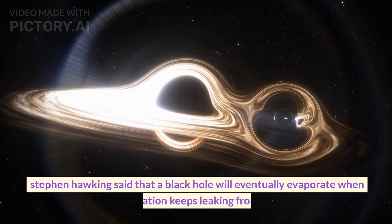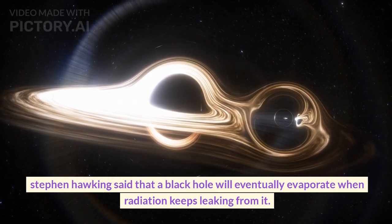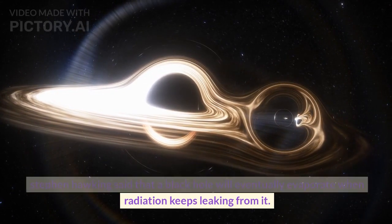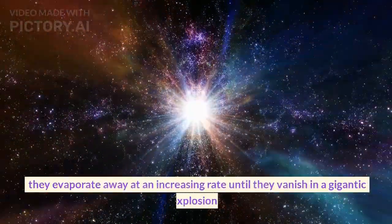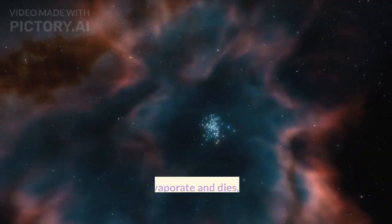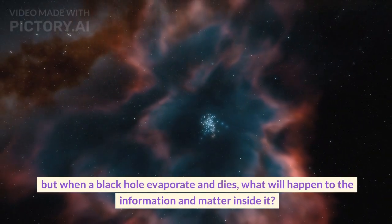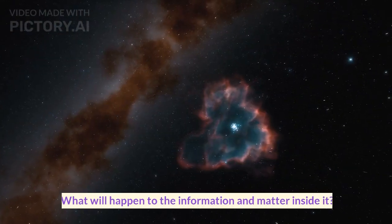Stephen Hawking said that a black hole will eventually evaporate when radiation keeps leaking from it. Black holes are not eternal—they evaporate away at an increasing rate until they vanish in a gigantic explosion. But when a black hole evaporates and dies, what will happen to the information and matter inside it?